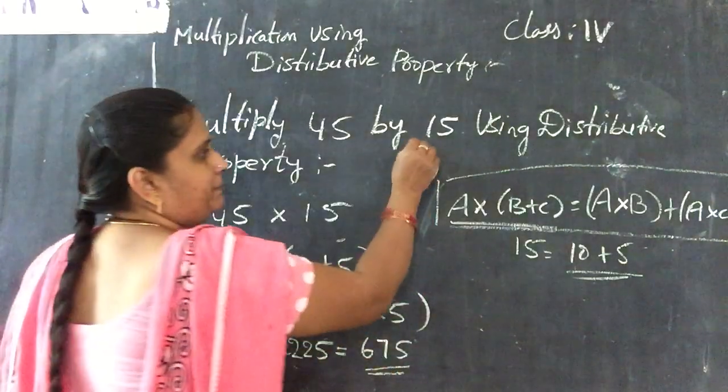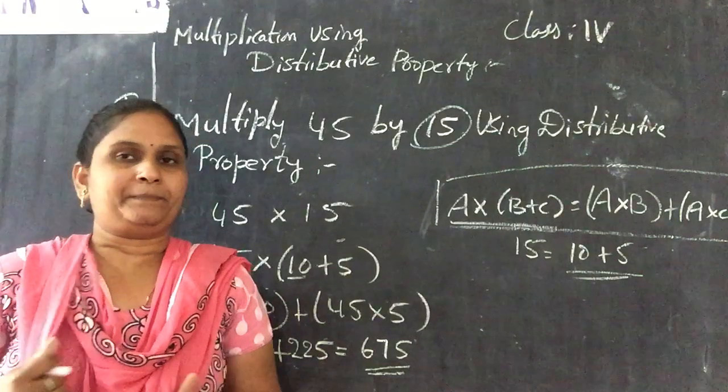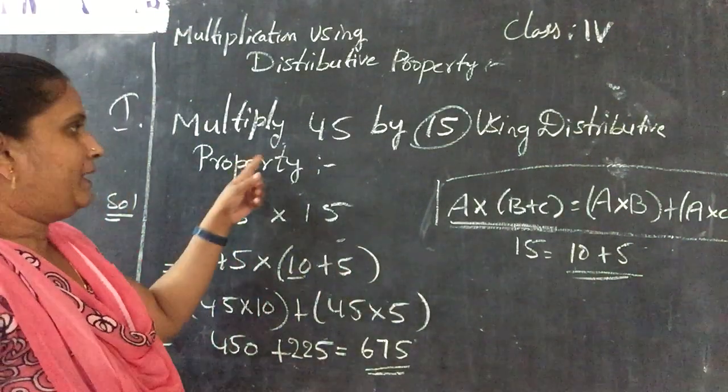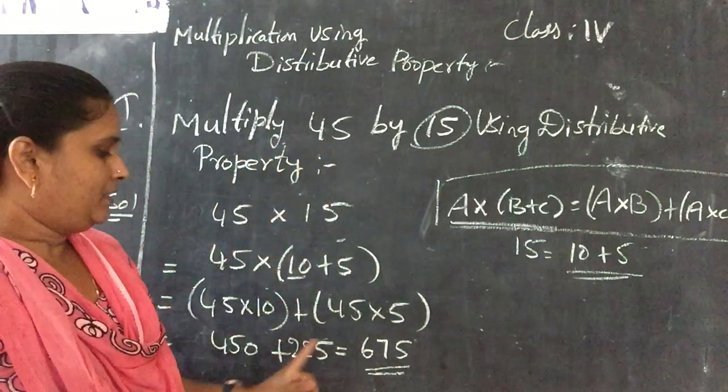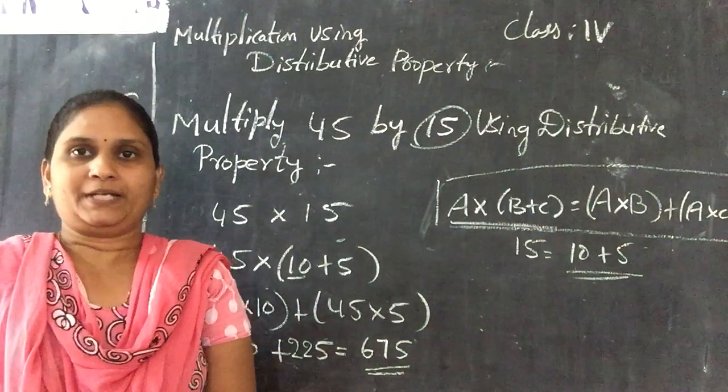This will be comes under the distributive property. So the multiplier has to divide into two parts, two different parts. And with that we have to multiply the multiplicand. Then last we have to do the addition. Then we will get the product of that number.